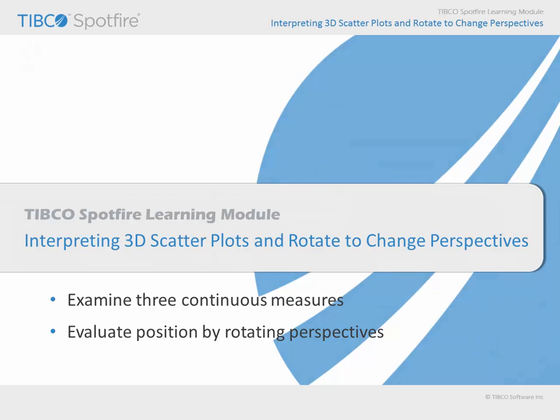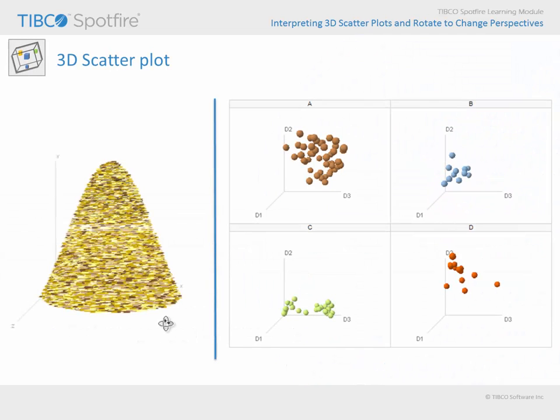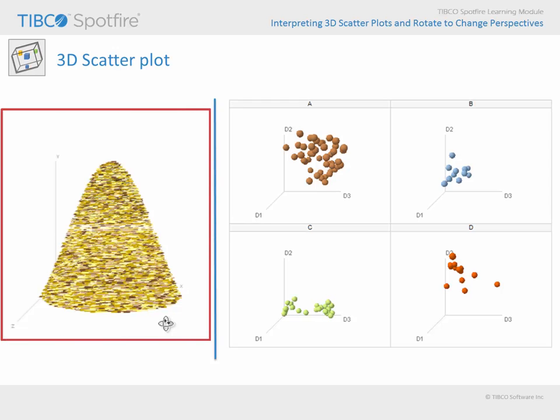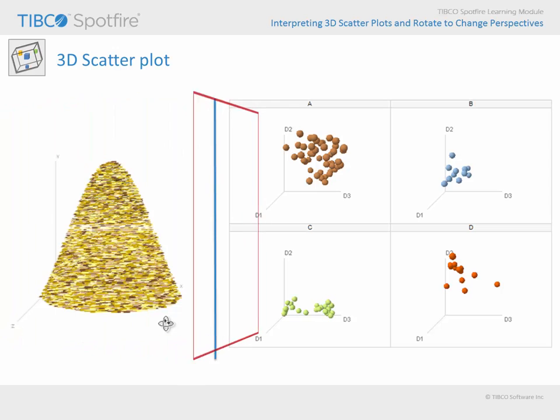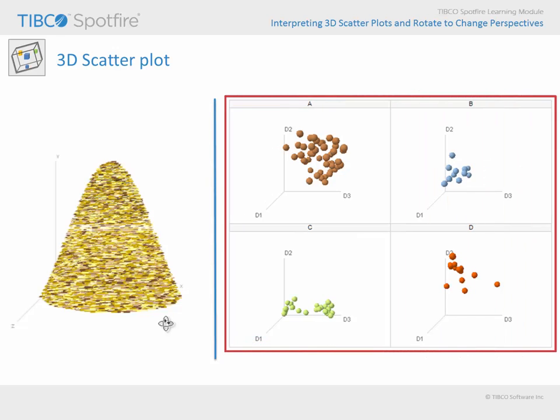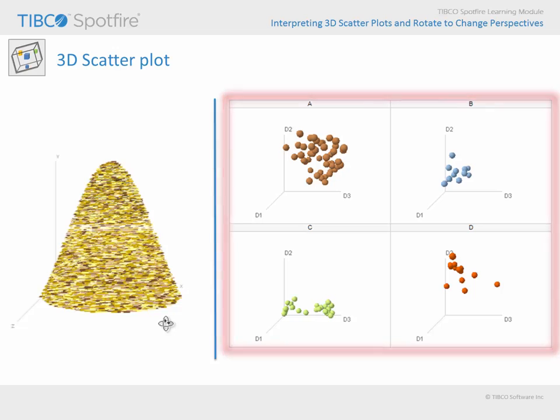As we consider the 3D scatter plot, please be aware that this visualization is useful not only for viewing three dimensions of data which describe points representing positions in actual three-dimensional space, such as this conical haystack on the left, but may also be useful for taking any three measures and identifying outliers or cluster groupings in those three dimensions.